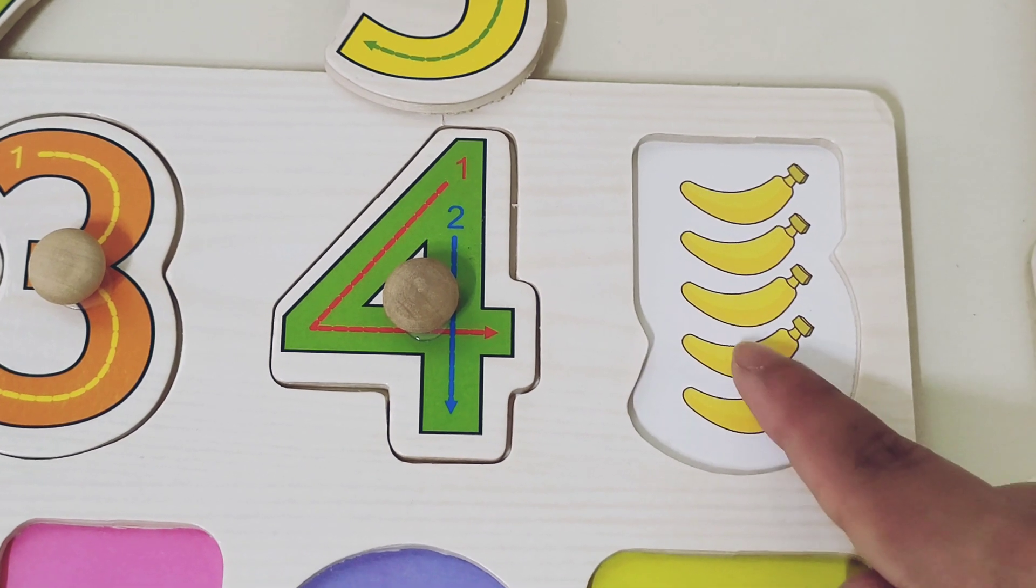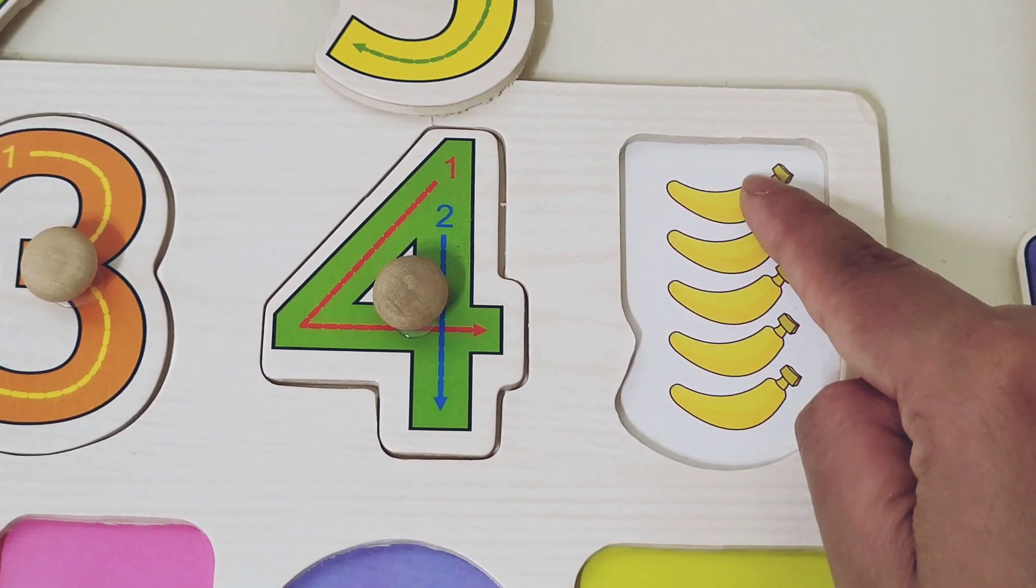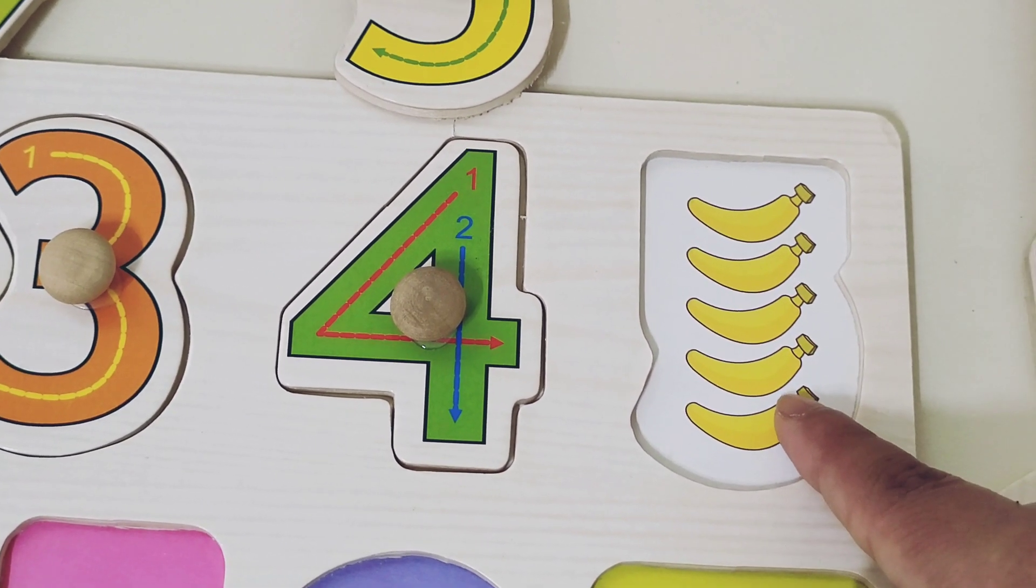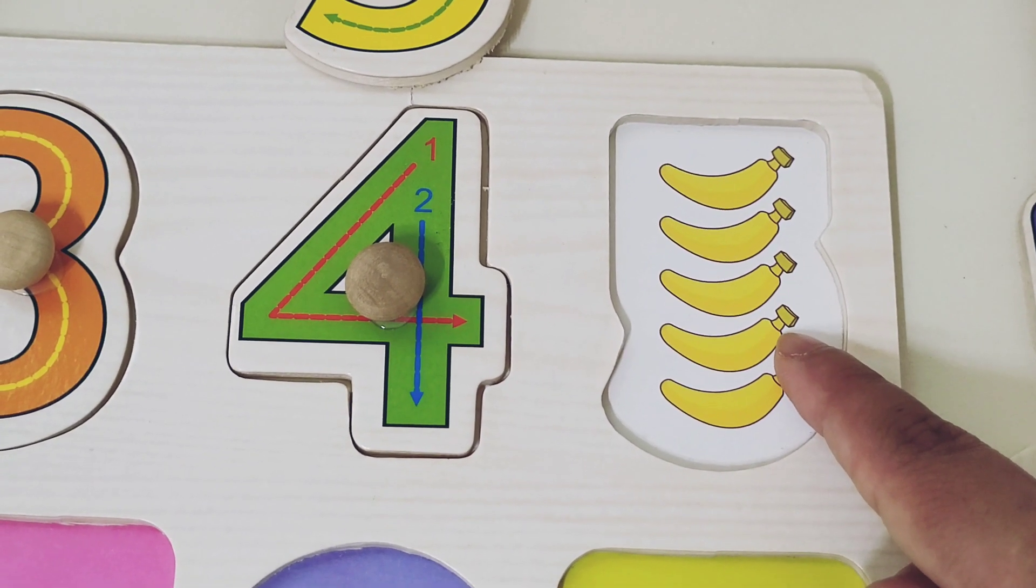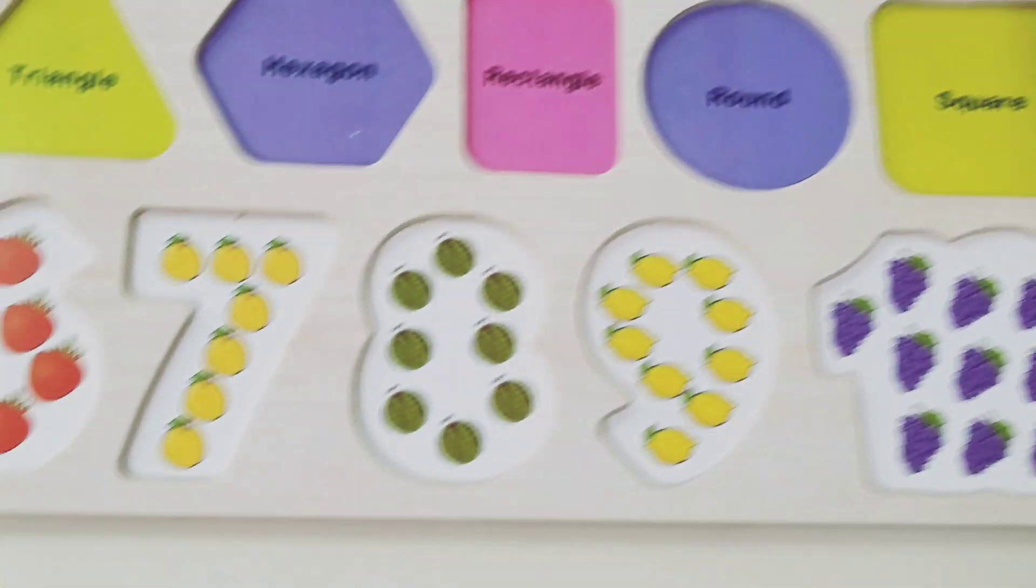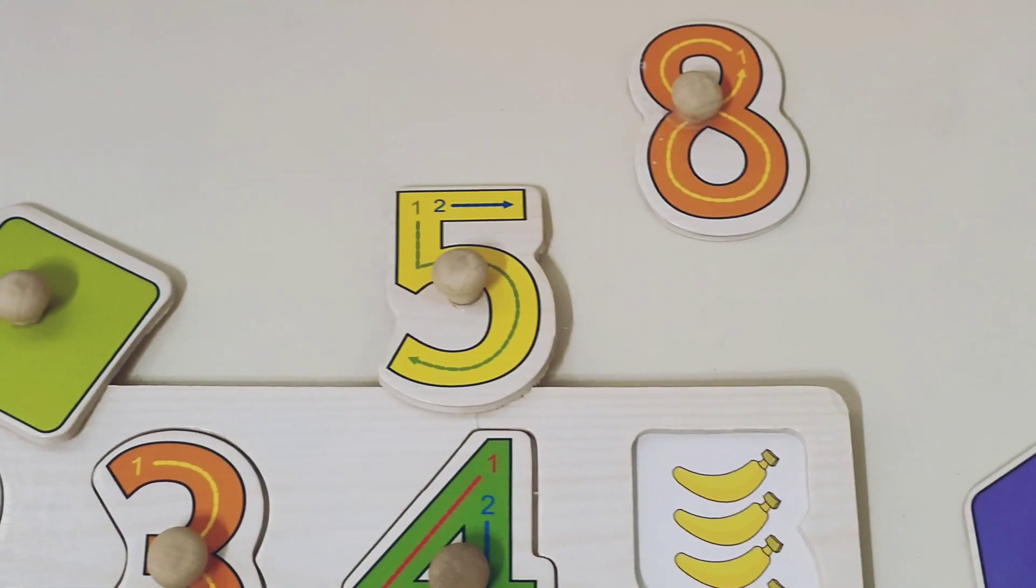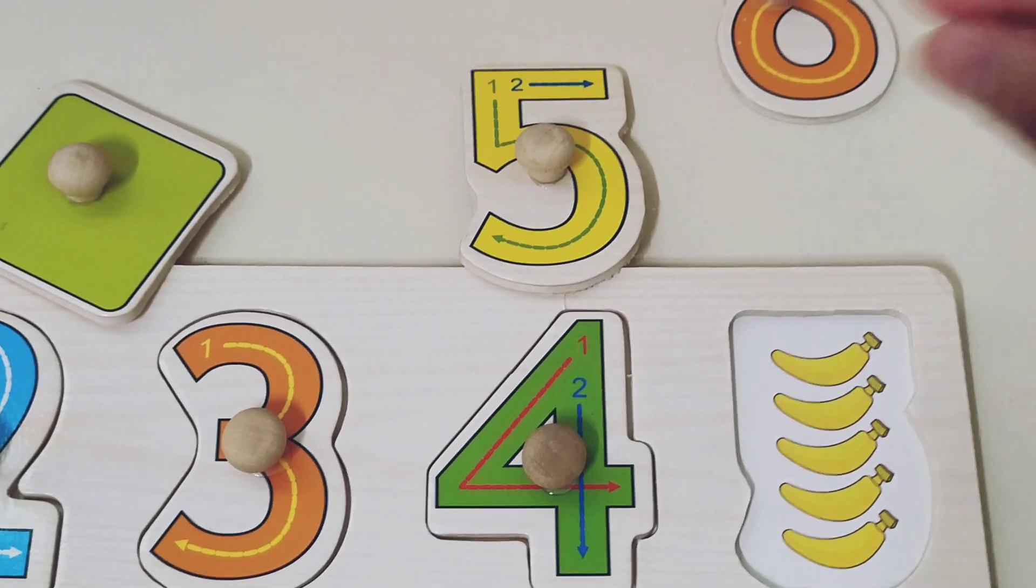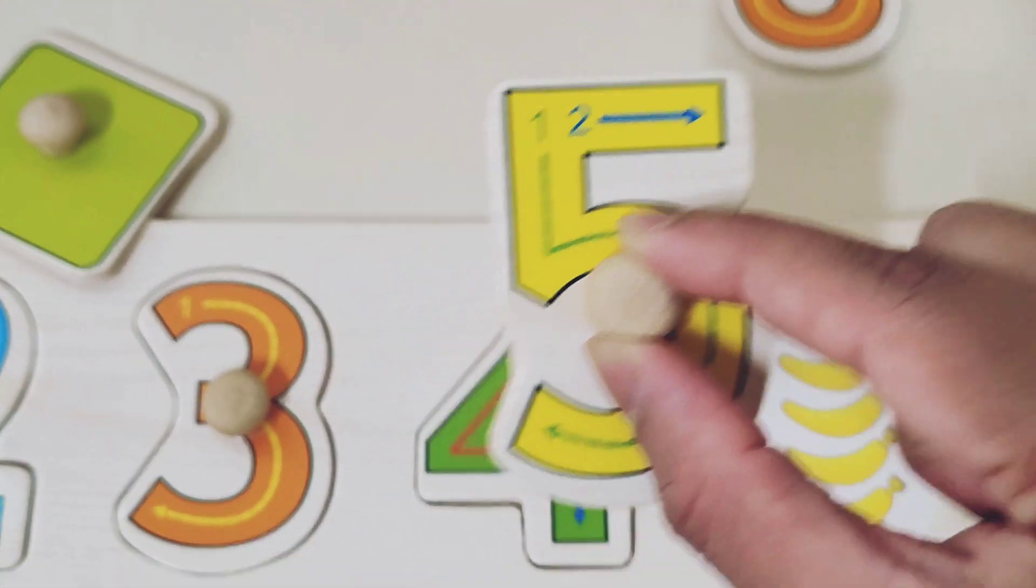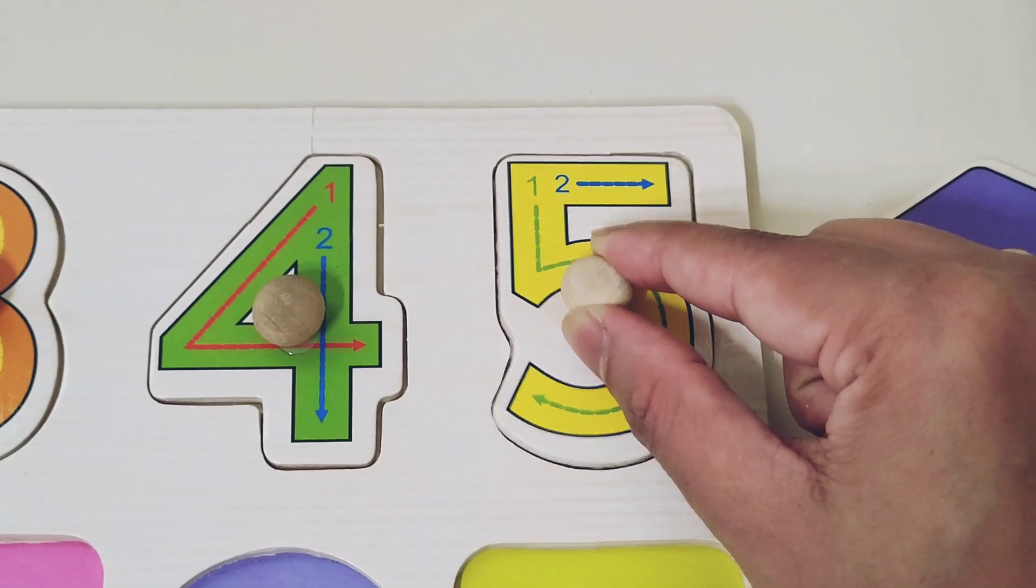And here we have 1, 2, 3, 4, 5. 5 bananas! Yellow color bananas! Let's find the number 5. Where is number 5? Oh yeah! It's over there! Number 5! Let's pick the number 5 here.